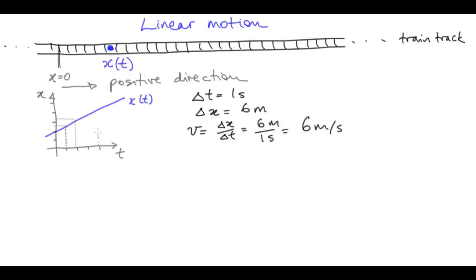I can choose a longer time interval, say 3 seconds, and see that the displacement is 18 metres, so the velocity is still 6 metres per second. In fact, any time interval I choose will give me velocity equals 6 metres per second, the velocity is constant, and a graph of the velocity as a function of time is just a horizontal line.